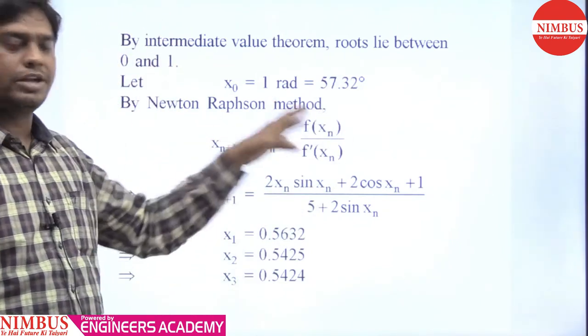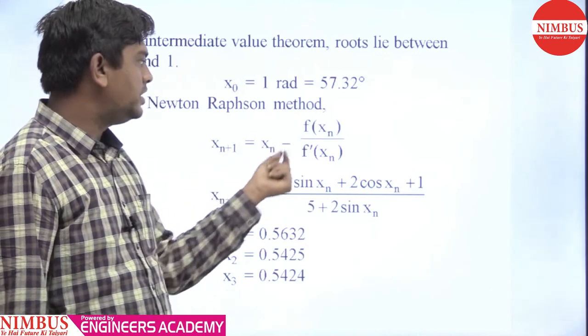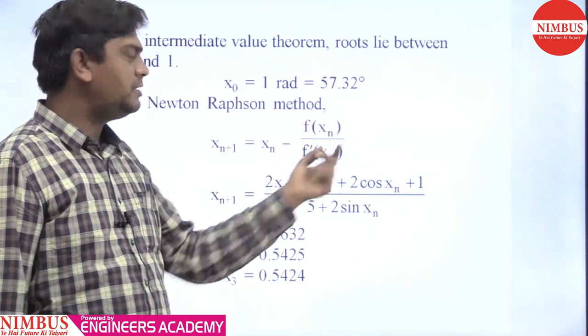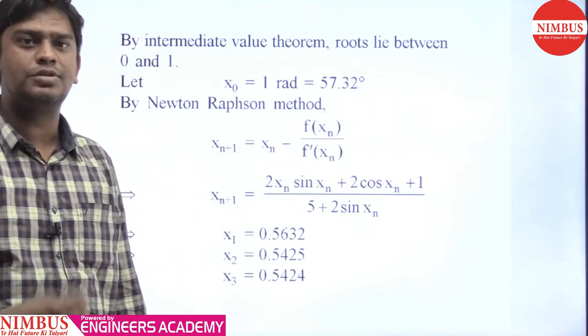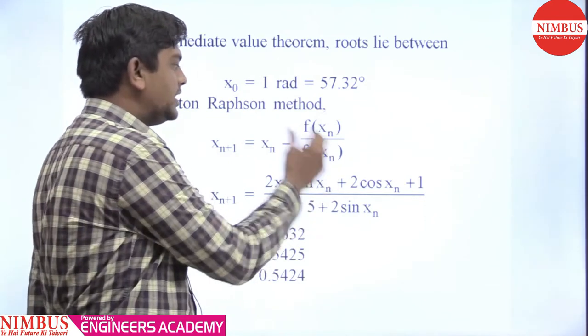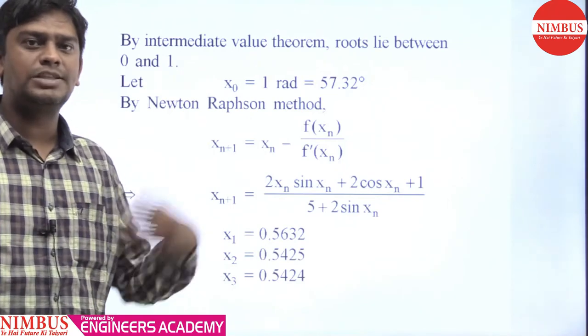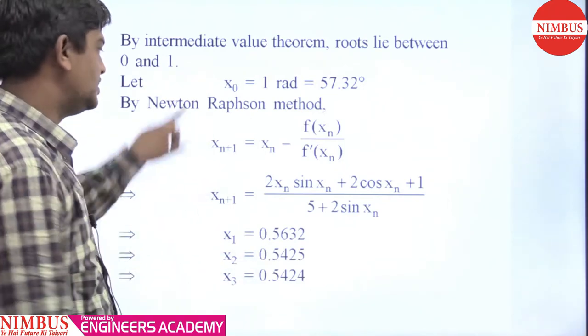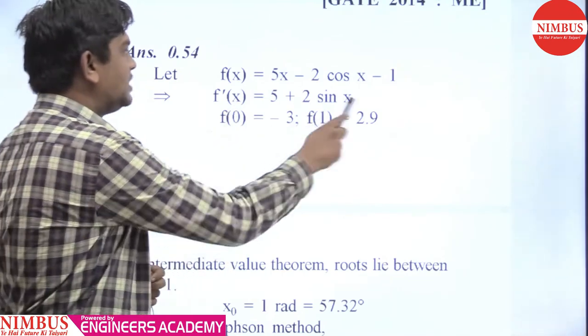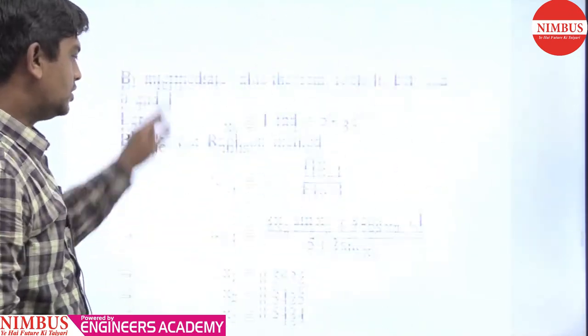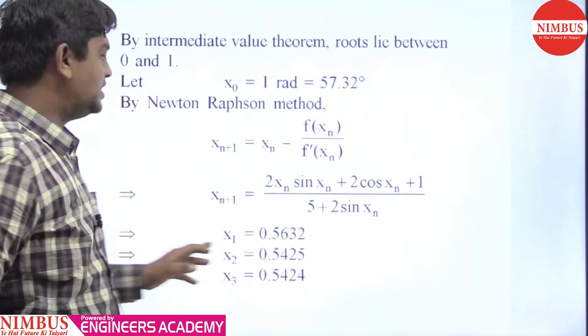Now we have to obtain Newton's iteration: xₙ₊₁ = xₙ - f(xₙ)/f'(xₙ). f(xₙ)'s value is when we put xₙ here, and f'(xₙ)'s value is when we put xₙ here. So I will put all the values here. Now I am going to get x₁.